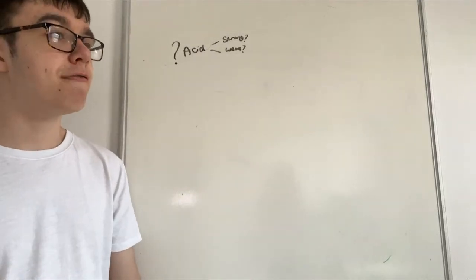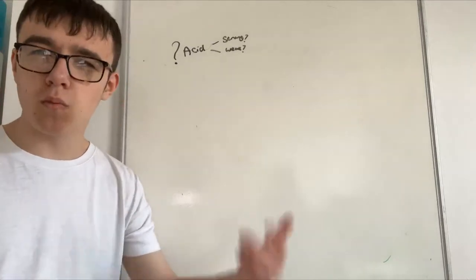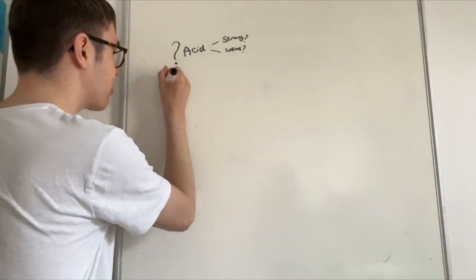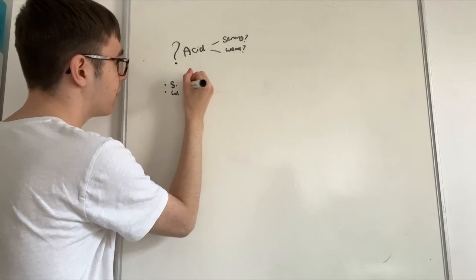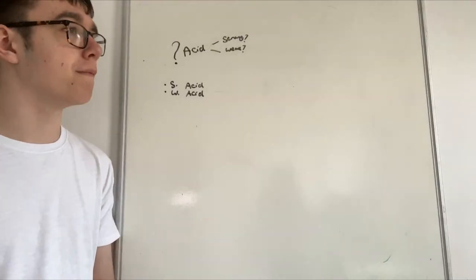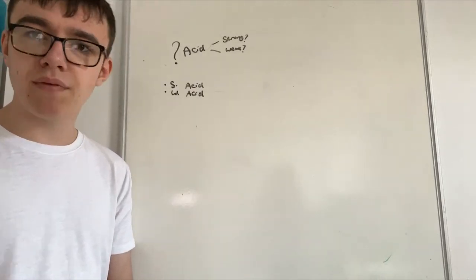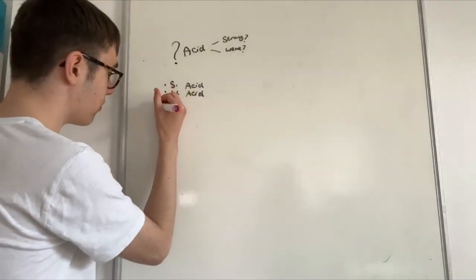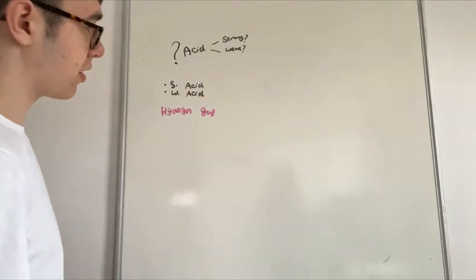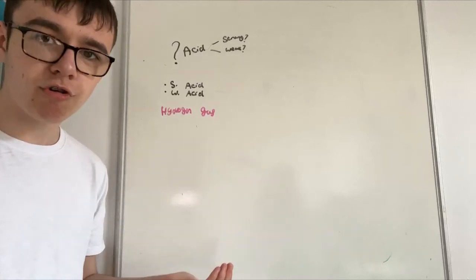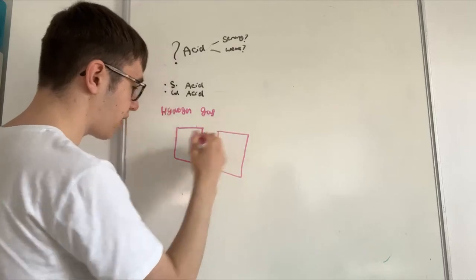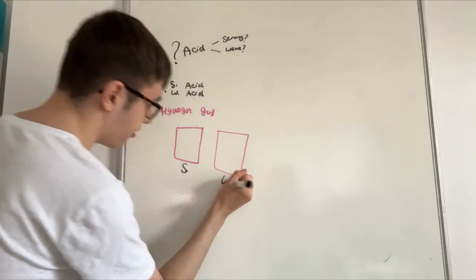In an exam, even if you don't know the experiment, you can get two marks just for writing the definitions of a strong and weak acid — that gives context. If you do know it, that's four extra marks. A strong acid quickly produces lots of hydrogen gas. The common misconception is that a weak acid produces fewer hydrogen ions — that's not true. Given enough time, a weak acid will make the same amount.